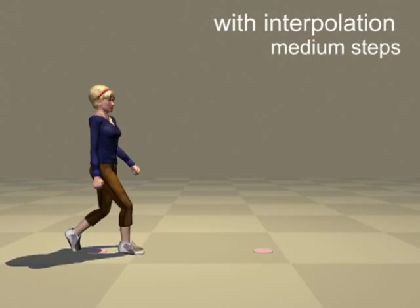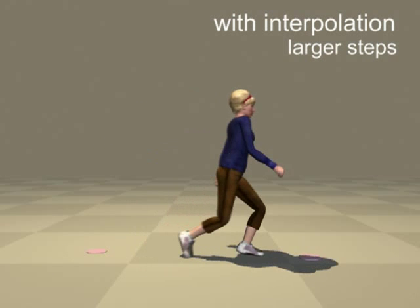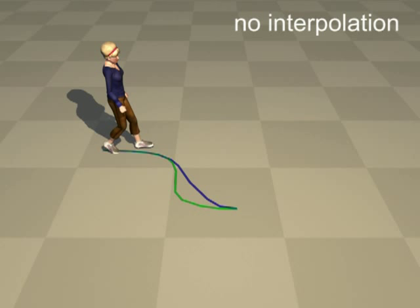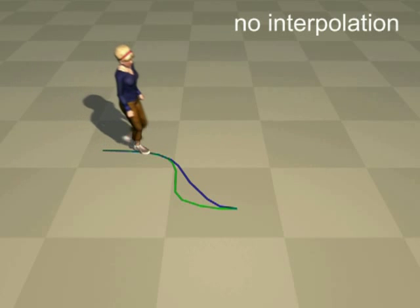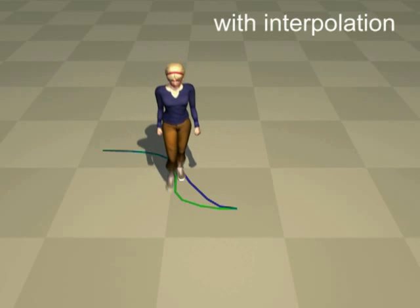Interpolation allows us to synthesize walks with different step lengths. In this experiment, the character needs to follow the green curve. Without interpolation, the motion follows the blue curve. With interpolation, the motion follows the green curve more precisely.